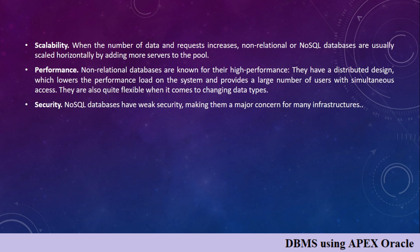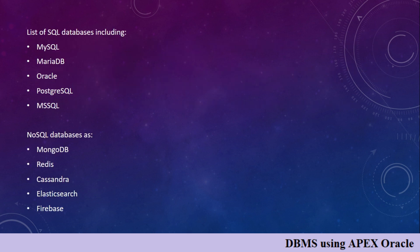NoSQL also has factors like scalability, performance, and security, which we will discuss in future lectures. The general SQL database software used by different companies includes MySQL, MariaDB, Oracle, PostgreSQL, and MSSQL. For NoSQL, the commonly used software includes MongoDB and Firebase. The most popular SQL databases are MySQL and Oracle, and for NoSQL, MongoDB and Firebase are most popular. We will continue further in the next lecture.